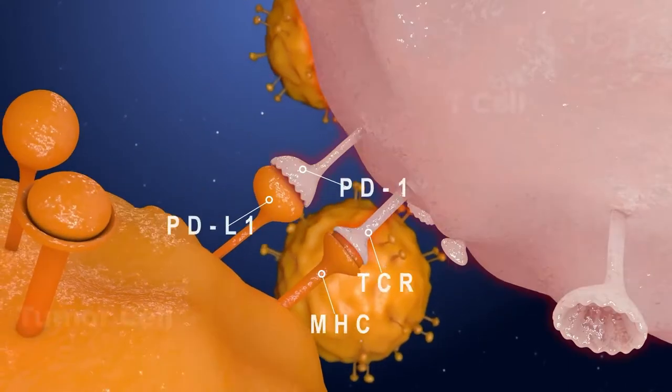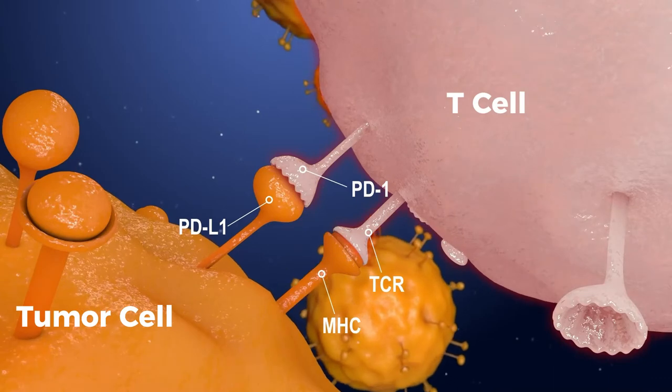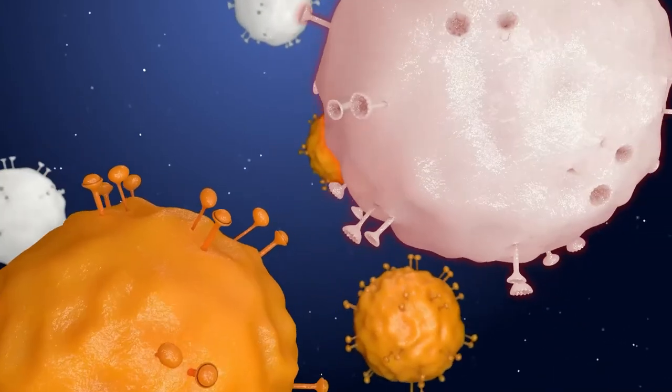However, cancer cells take advantage of these checkpoints to switch the T-cells off, and thereby evade immune surveillance.